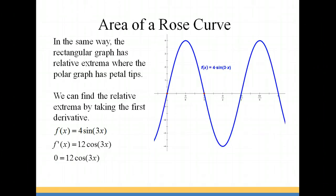So we're going to set zero equal to 12 cosine 3x and solve for x. So that's going to be where the cosine of 3x is equal to zero, or where 3x equals pi over 2, 3 pi over 2, 5 pi over 2, and so on. Then solving for x, we get pi over 6, pi over 2, and 5 pi over 6 as three of our maximum or minimum points.